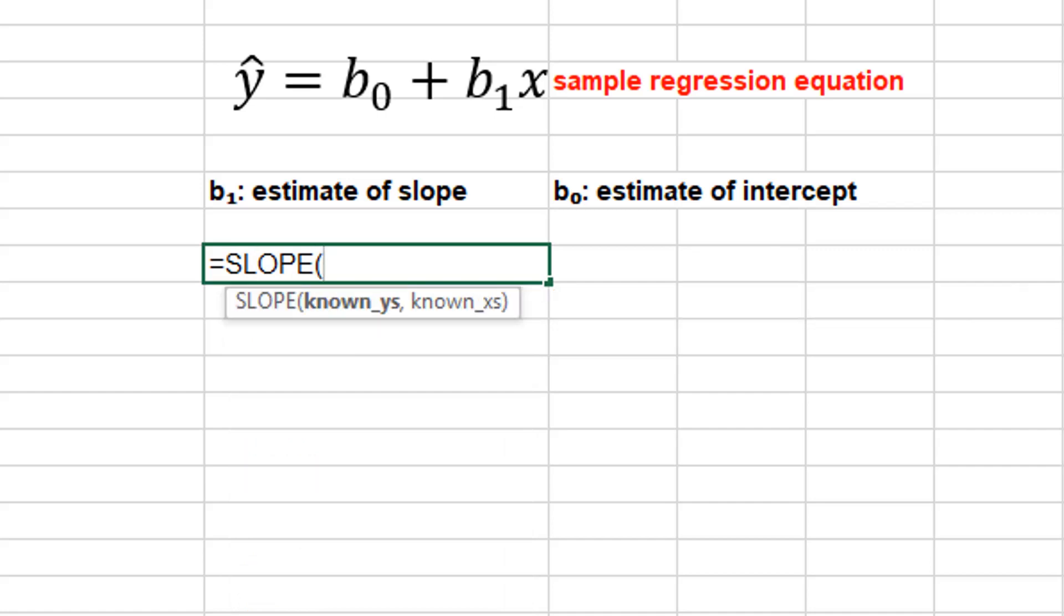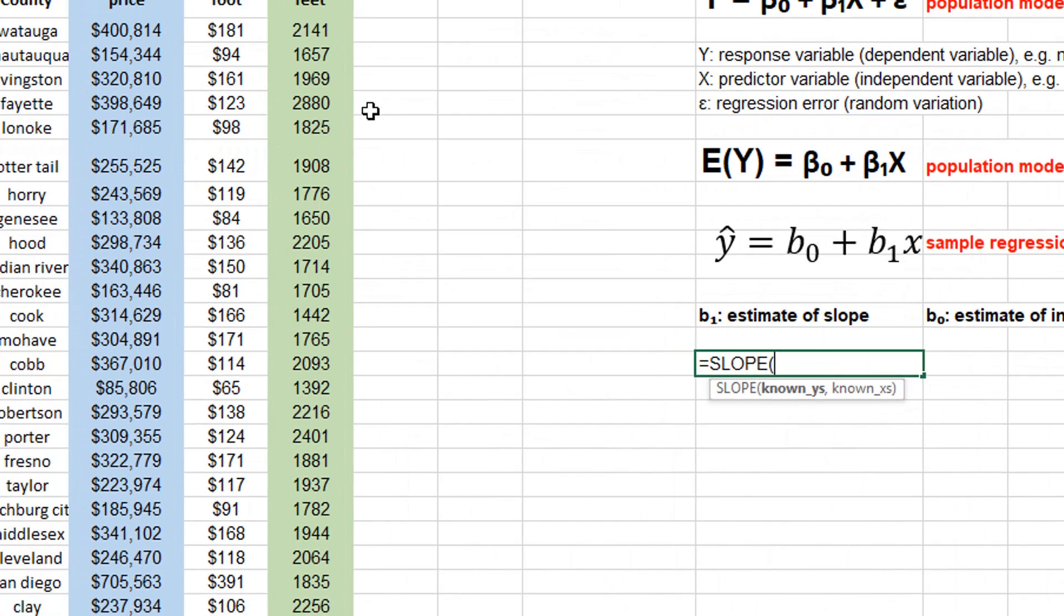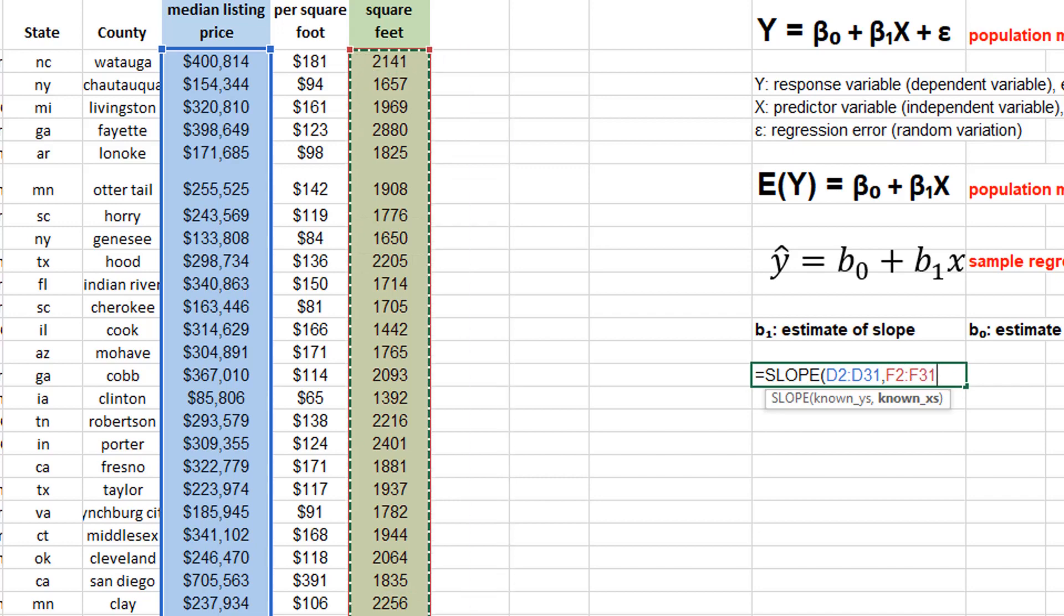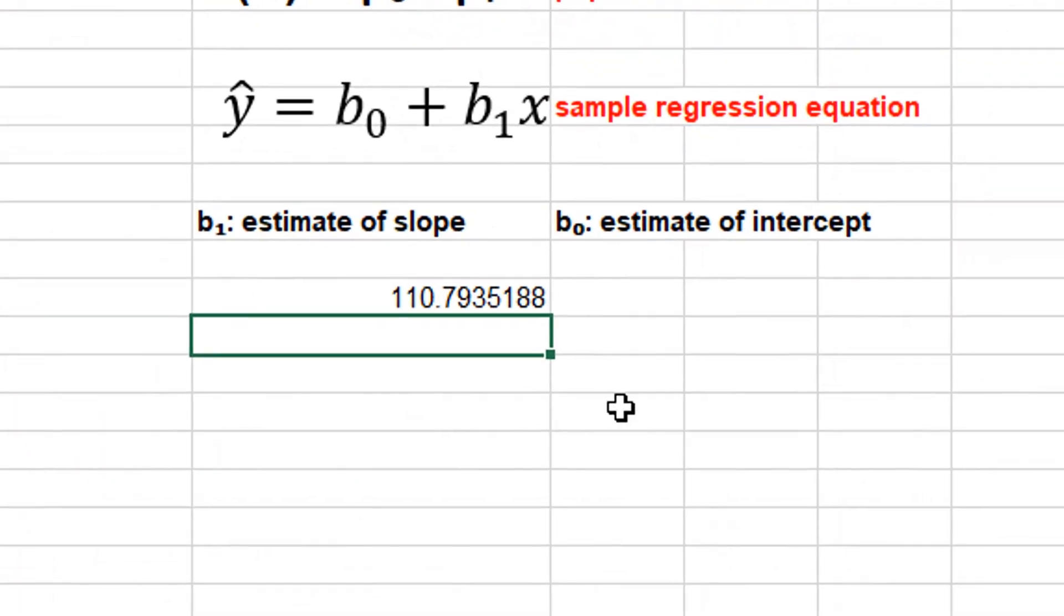SLOPE, parenthesis, and you just put in two ranges. The first is the y's, so the median listing price is the y, comma, and the x's. Select that, close it, you get your slope.